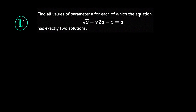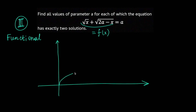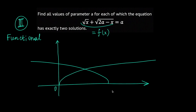The third solution is functional. I'm going to consider the left-hand side of the equation as a function f(x) and think about the graph of this function. Let's think of √x and √(2A − x) separately. The graph of √x starts at x = 0 and the graph of √(2A − x) starts at x = 2A, and by symmetry their intersection is at x = A.